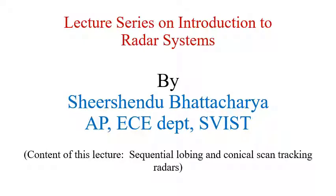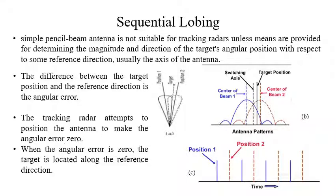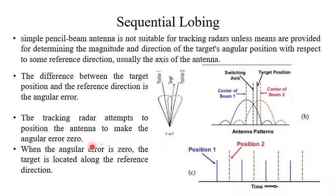In this lecture series on introduction to radar systems, we are discussing tracking radar. We will discuss sequential lobing and conical scan types of tracking radars. A simple pencil beam antenna is not suitable for tracking radars unless means are provided for determining the magnitude and direction of the target's angular position with respect to some reference direction, usually the axis of the antenna. The difference between the target position and the reference direction is called the angular error. The tracking radar attempts to position the antenna to make the angular error zero. When the angular error is zero, the target is located along the reference direction.